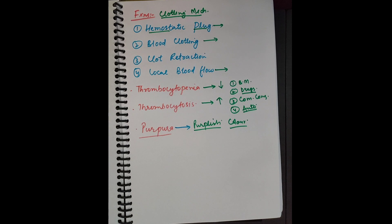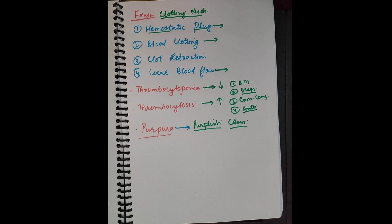To summarize: platelets are formed from megakaryocytes, they are the smallest cells of the blood, and they are involved in the clotting mechanism. In subsequent videos I will discuss the clotting mechanism in detail — how intrinsic and extrinsic factors work. If you have suggestions or queries, write in the comment box. Share this video with friends and don't forget to subscribe. Thanks for watching.